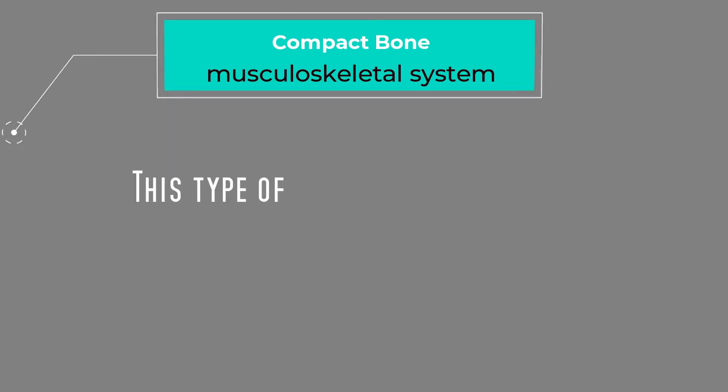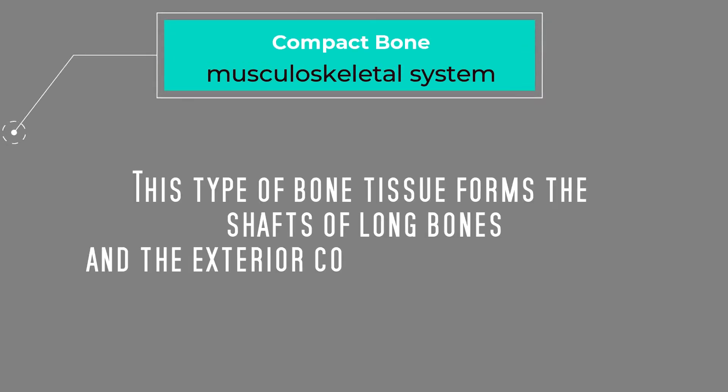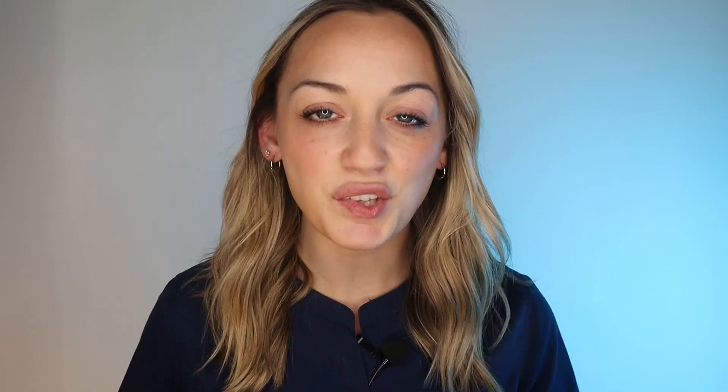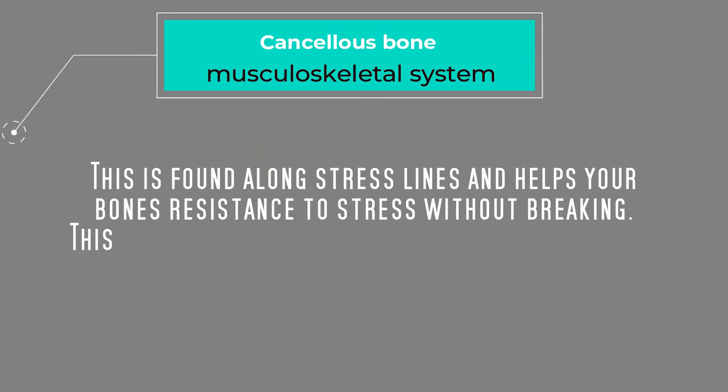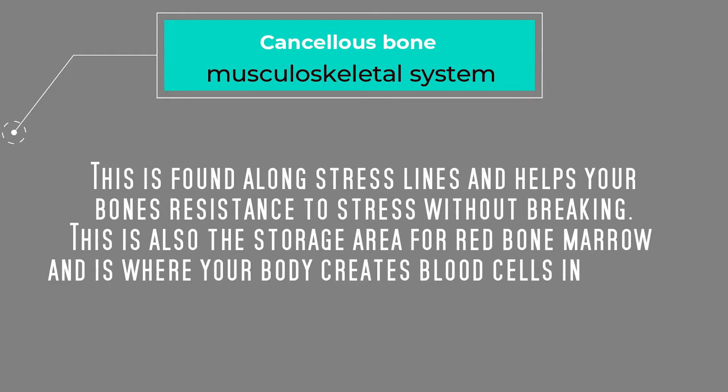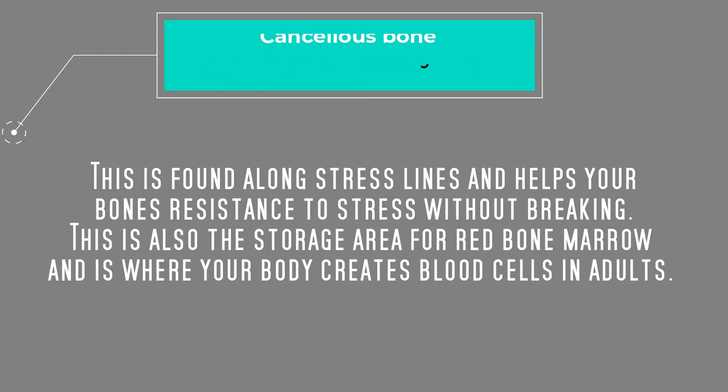Compact bone is the strongest type of bone tissue. This type of bone tissue forms the shafts of long bones and the exterior covering of other bones. Cancellous bone, on the other hand, is located on the interior of the bone structure. This is found along stress lines and helps your bones resist stress without breaking. This is also the storage area for red bone marrow and is where your body creates blood cells in adults.